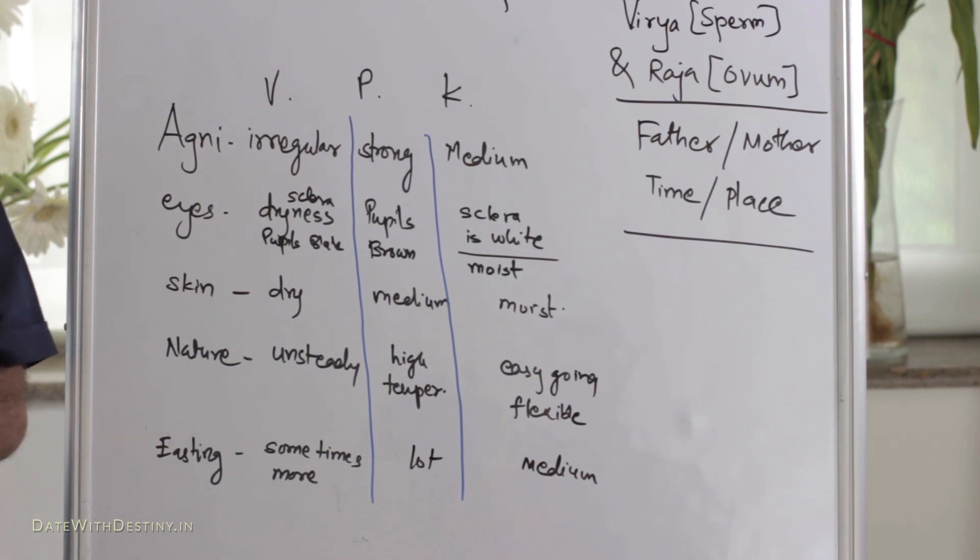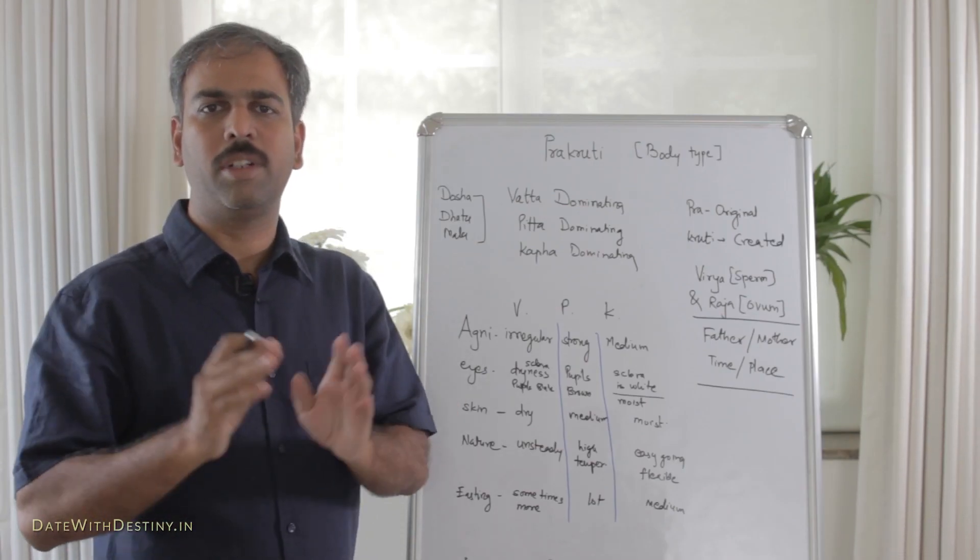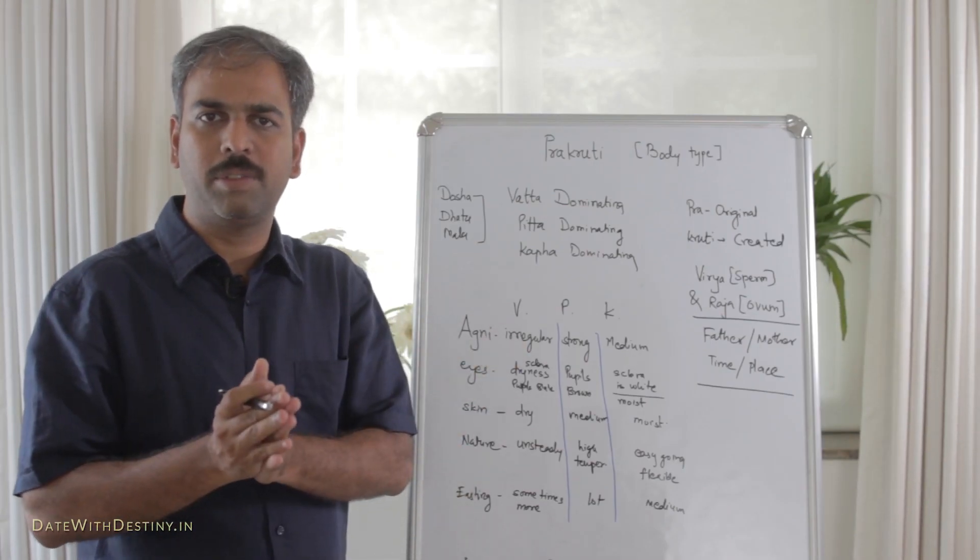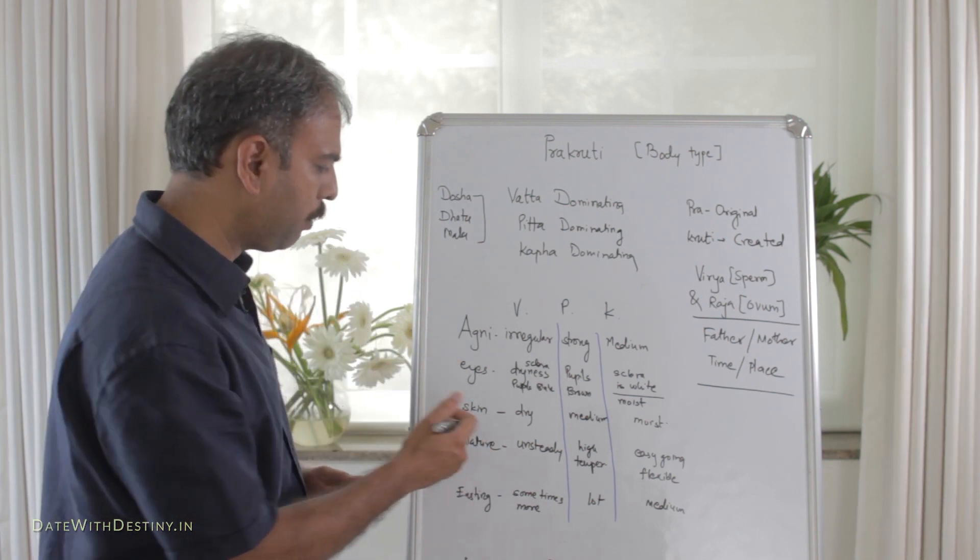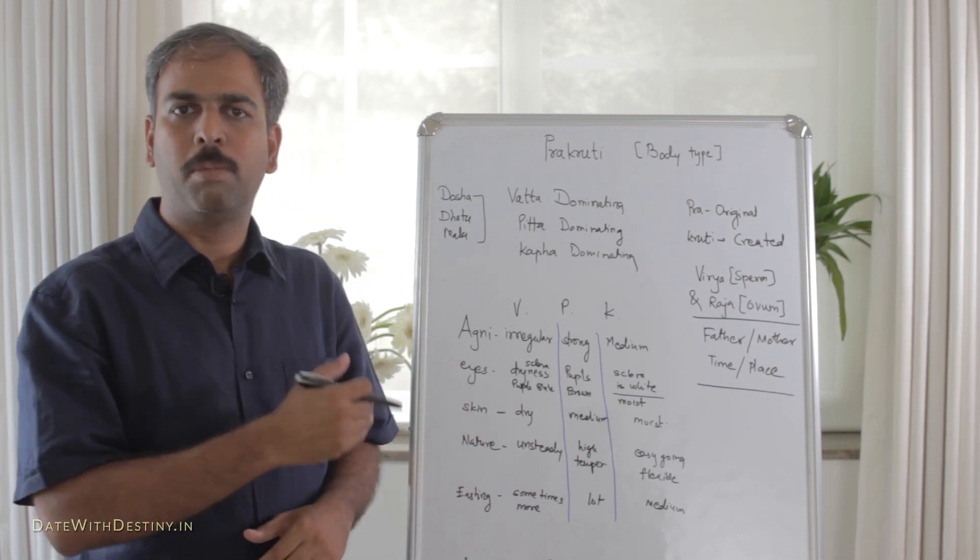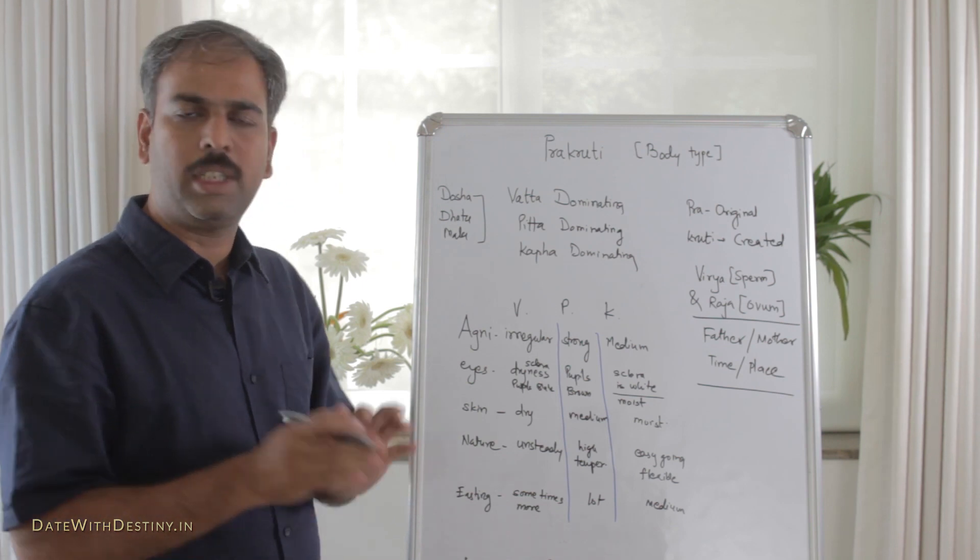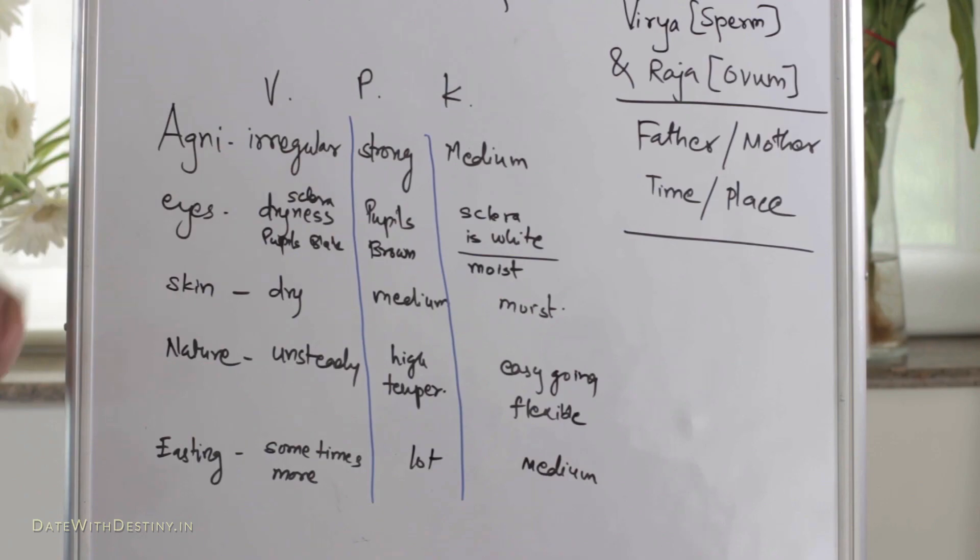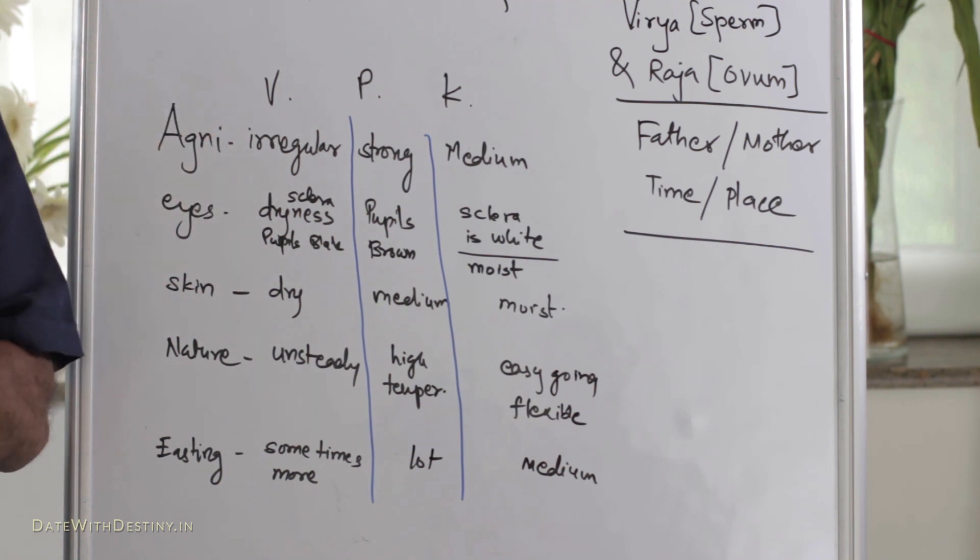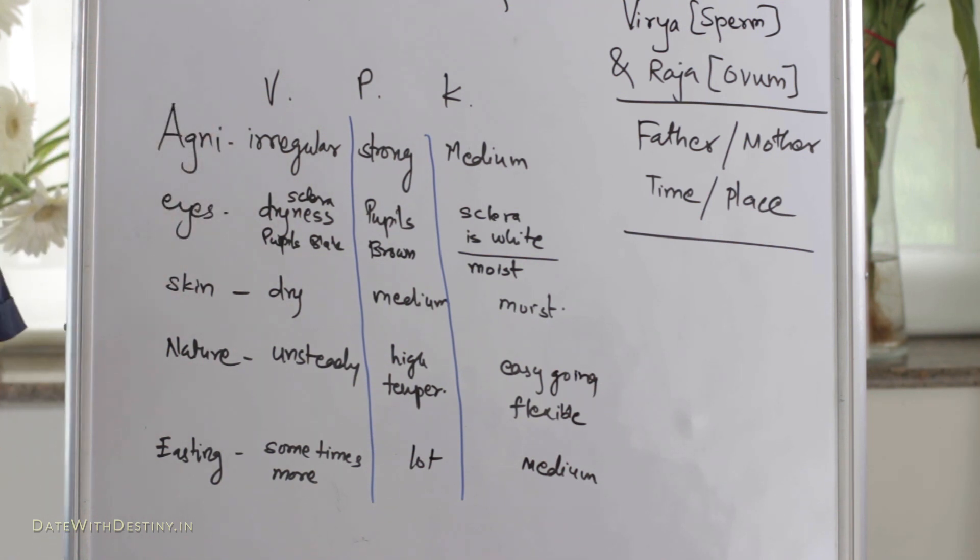Then, the nature. It is actually the nature of the mind, because Ayurveda thinks that mind and body are not different things. They are connected with each other. So we are taking the point of nature. With Vata Prakruti, it is very unsteady nature. With Pitta Prakruti, the person is with high temperament. While with Kapha Prakruti, he is a very flexible and easy-going person.